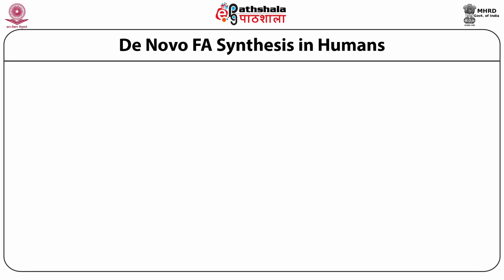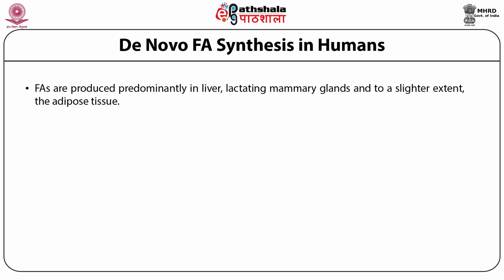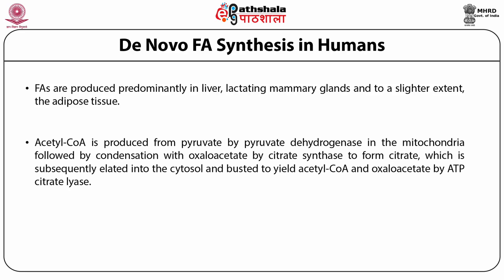The de novo fatty acid synthesis in humans: fatty acids are produced predominantly in the liver, lactating mammary glands, and to a slighter extent in adipose tissue. The majority of acetyl-CoA is produced from pyruvate by pyruvate dehydrogenase in the mitochondria.